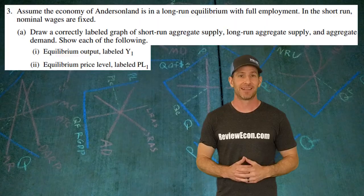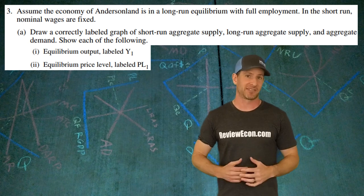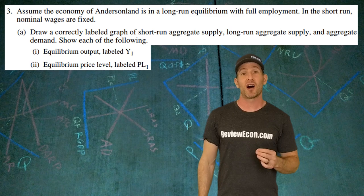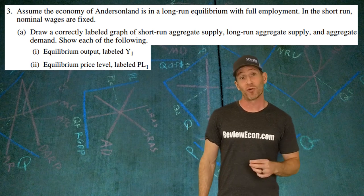Let's do it. It's go time. So this question starts off with Anderson Land. They have full employment and they are in long-run equilibrium. We have to draw out an AS-AD model for the given scenario.